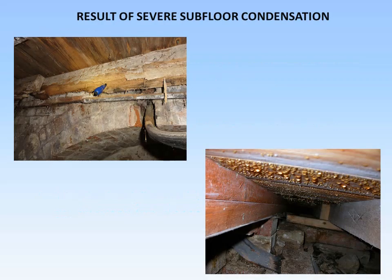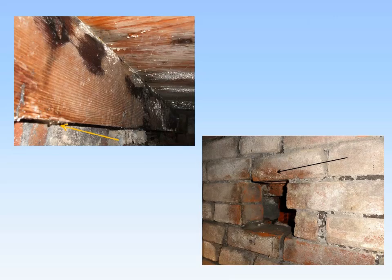The results of severe subfloor condensation include quite severe rot — you can see the screwdriver embedded into the timber, it's completely gone. There is cellophane fungus, droplets of condensate on the underside of the floorboards, more condensation and mould, with the arrow pointing to water droplets. On the right, condensate is forming around the aperture for the airbrick — the orange plastic airbrick visible in the outer leaf.